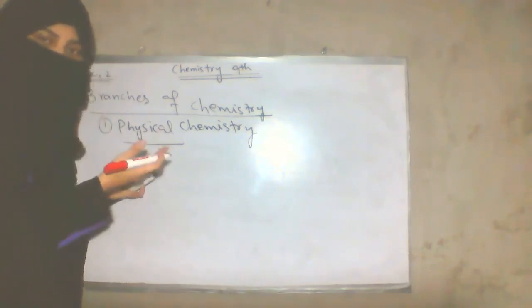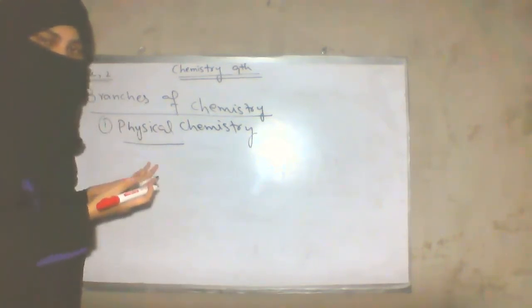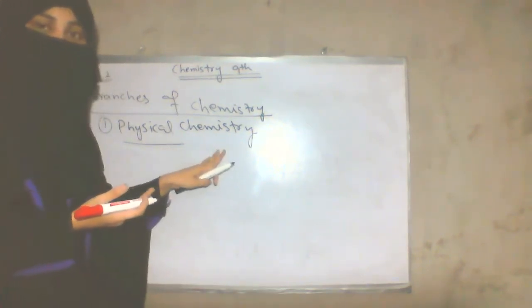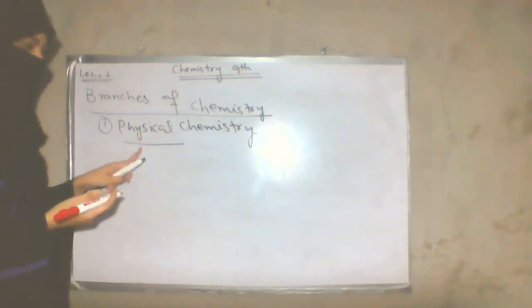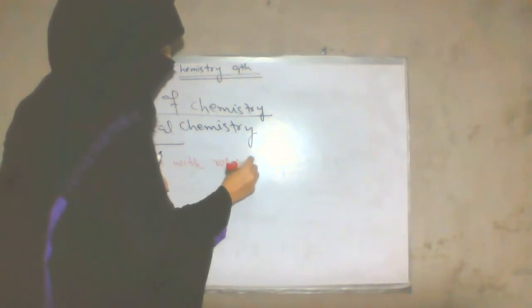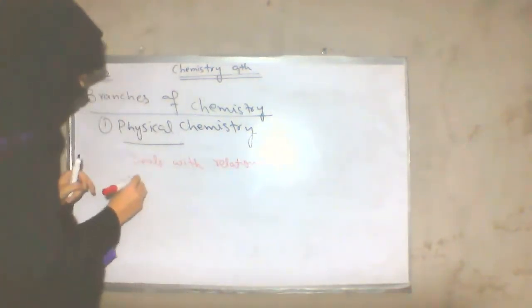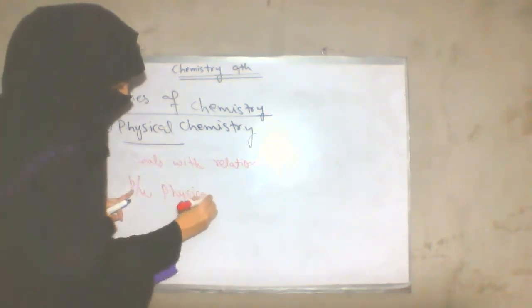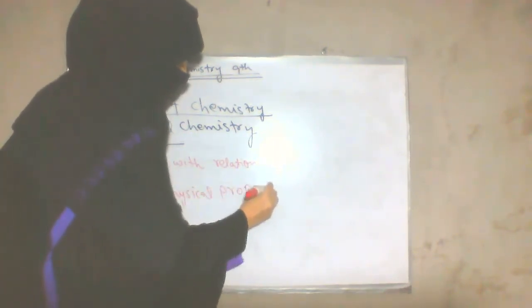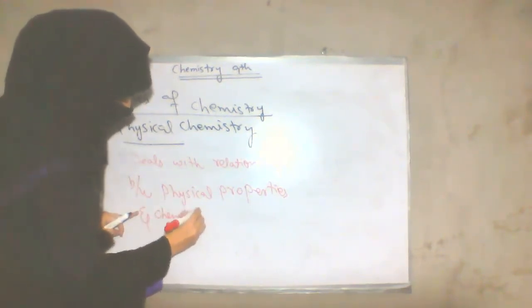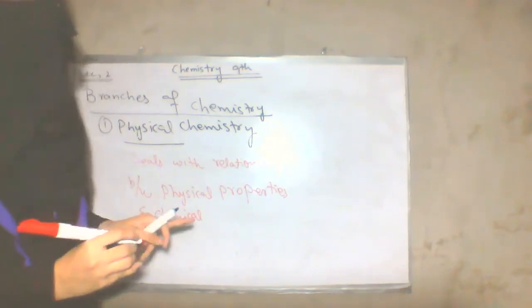We have discussed the physical state in the previous detail. Physical chemistry deals with the physical state associated with matter. We study chemical reactions, physical states, properties, and chemical reactions of physical and chemical properties.